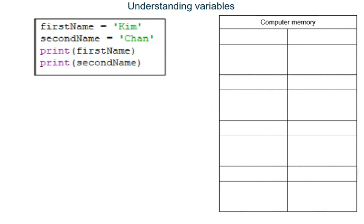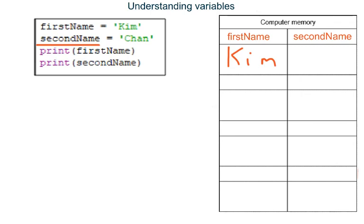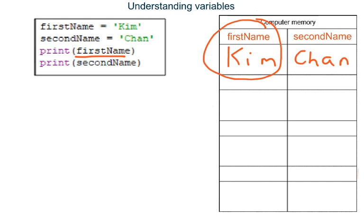Line 1 of this program creates a new variable named first name and stores inside it the string Kim. Line 2 creates a new variable named second name. Line 3 looks up what has been stored in variable first name and then outputs it, prints it on the screen.